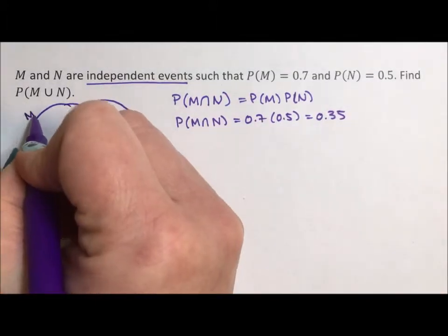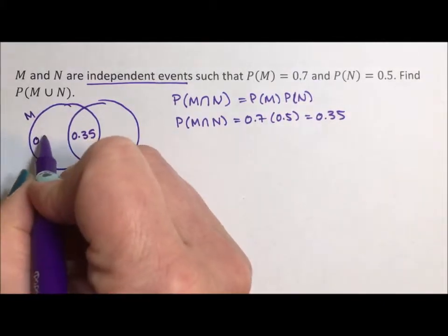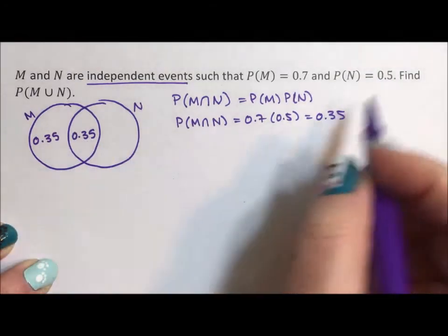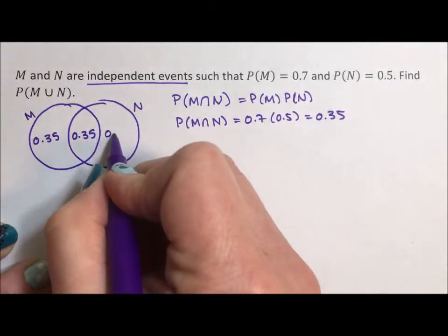So if this is M, which is 0.7, and we subtract 0.35, that leaves 0.35 here. And if this is N and the intersection is 0.35 and we subtract, that leaves 0.15 here.